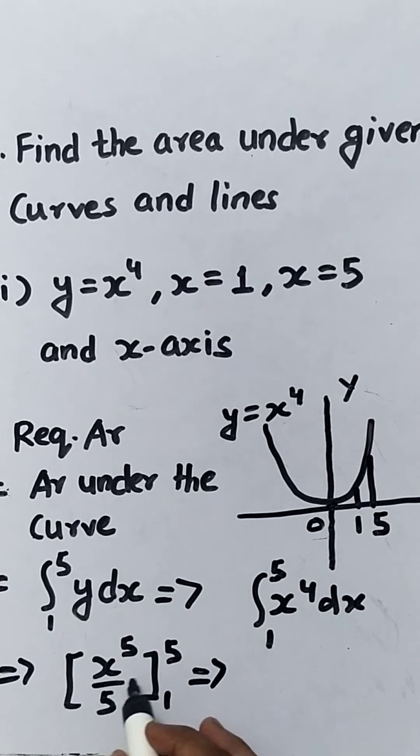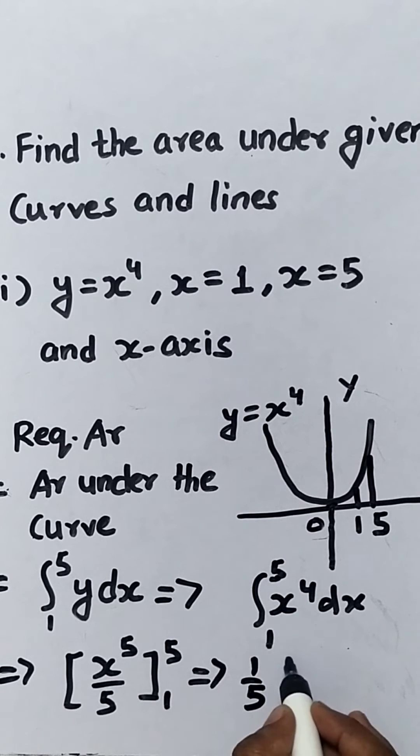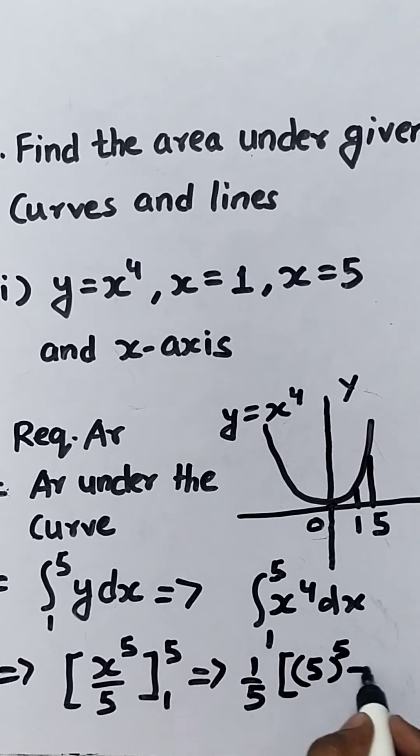Then, once upper limit, once lower limit. Take out 1 upon 5 outside. 5 to the power 5 minus 1 to the power 5.